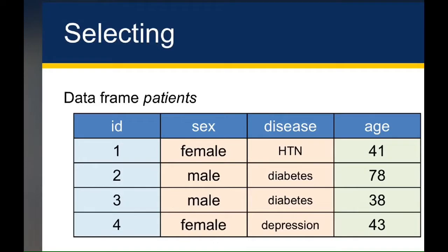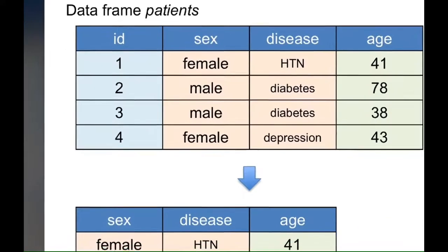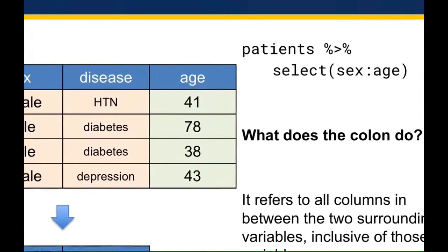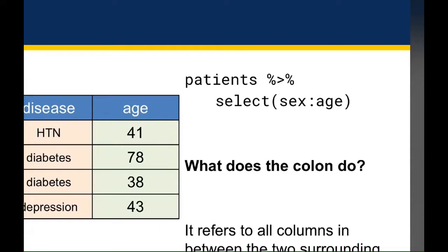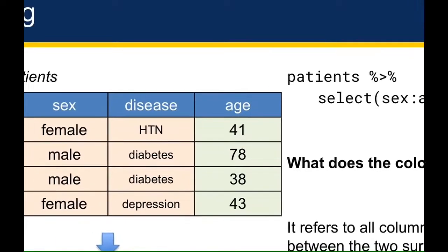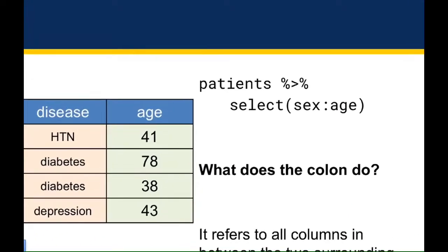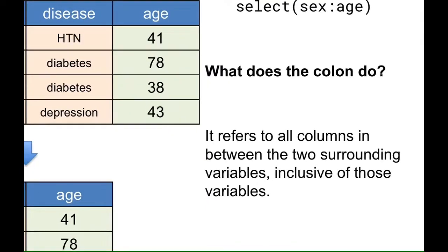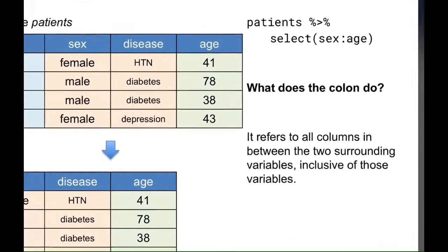If you wanted to select the columns sex, disease, and age, you could say patients then select sex, disease, and age separated by commas. Another way is to separate sex and age with a colon, which tells it to select all columns between sex and age, inclusive. So patients pipe select sex through age uses the colon to refer to all columns between sex and age and selects all of them.